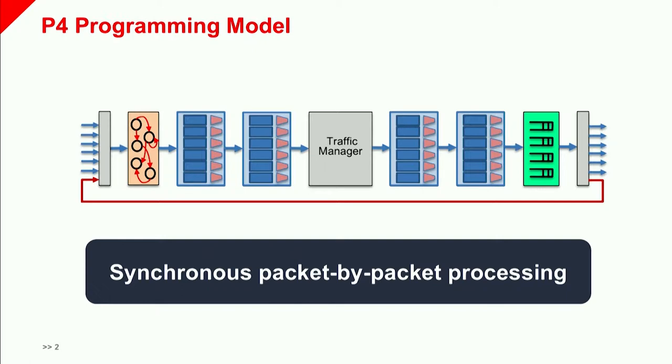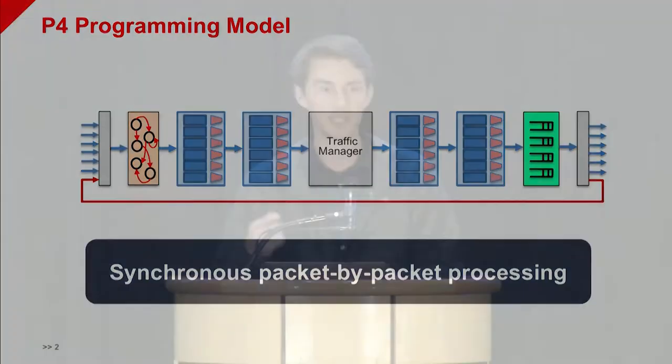Oftentimes we want to use the recirculation path to update some state at a previous pipeline stage. However, the P4 programming model just treats this recirculated data in the same way as all the other packets that are coming in, and this often doesn't quite capture what the programmer wants to express.